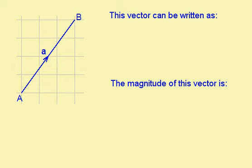This is a vector. The main feature of a vector is that it has magnitude and direction. This particular vector can be written as A. In text it would be a bold A, but because I'm using my handwriting, I can't do a bold A, so we underline it to show that it's a vector. It can also be written as AB, and we put an arrow to show the direction of the vector from A to B.